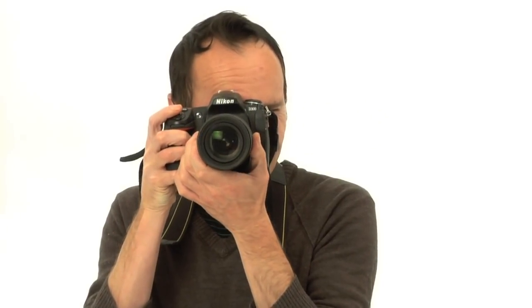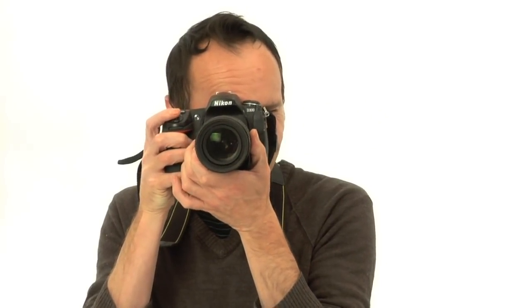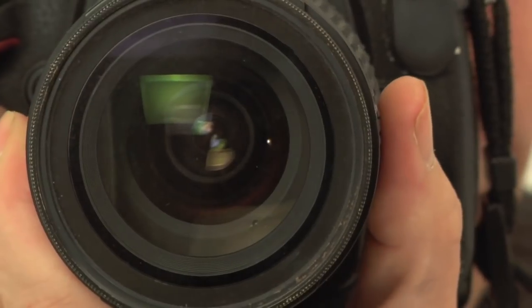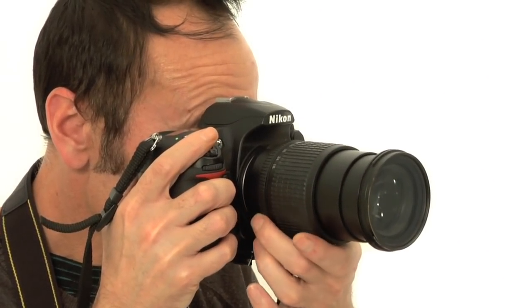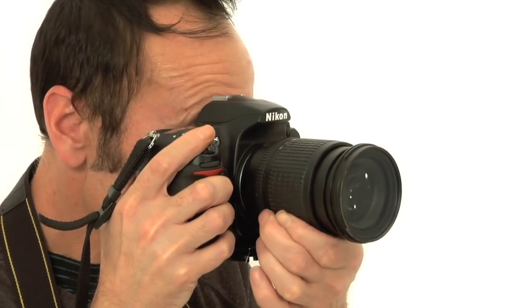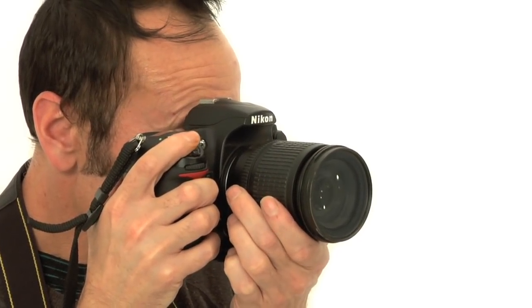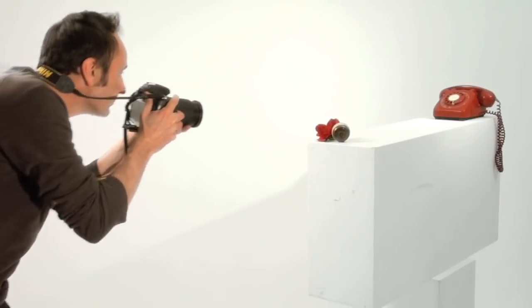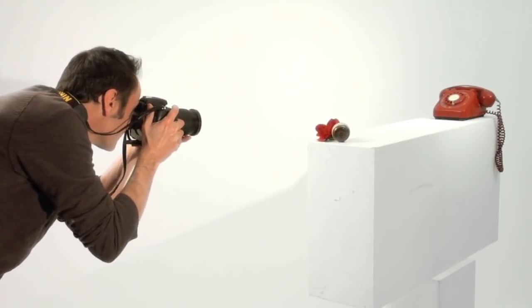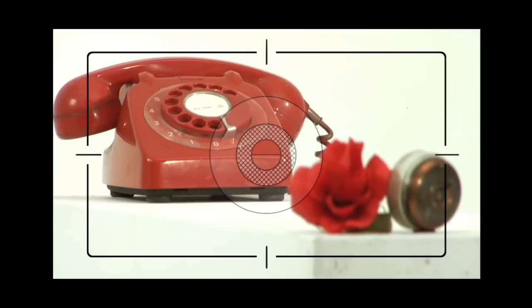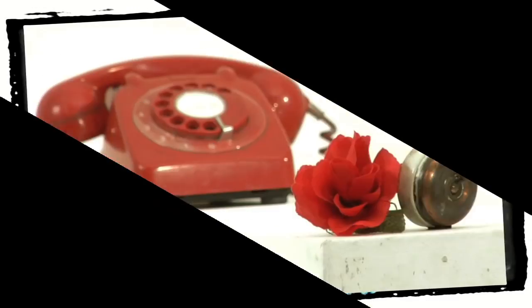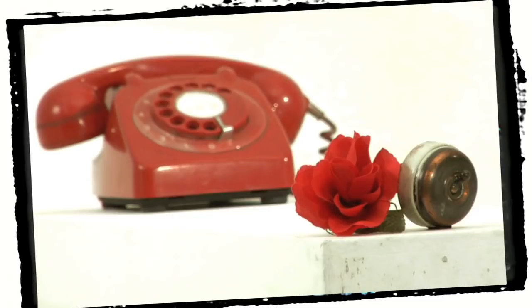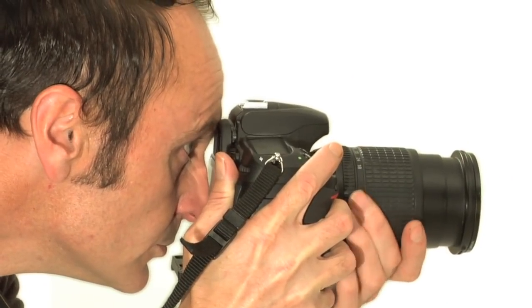The camera lens focuses light onto the film or sensor, creating a crisp image. You can play with your camera settings to control what is in focus in the image. Try using focus to highlight a particular object or area in the composition, or try having the image out of focus to create an effect.